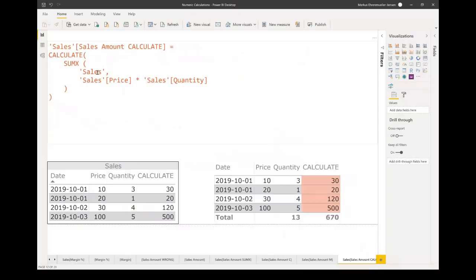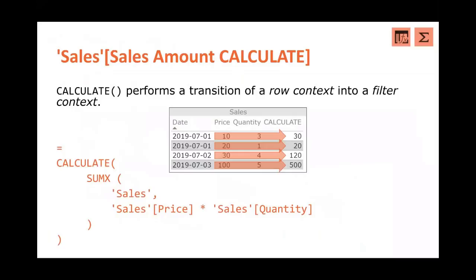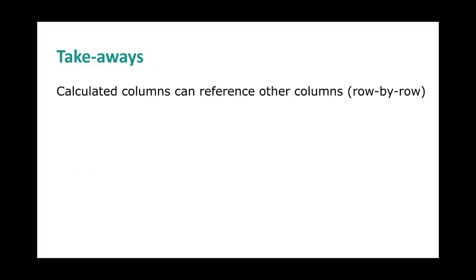So the second takeaway: calculated columns can reference other columns, and that's done row by row — for the current row you only see that column's value. But this row context does not filter tables used in iterator functions like SUMX. If you want the filter transition from row context to filter context, use CALCULATE explicitly, or put the formula in a measure — because DAX implicitly wraps CALCULATE around every measure call.